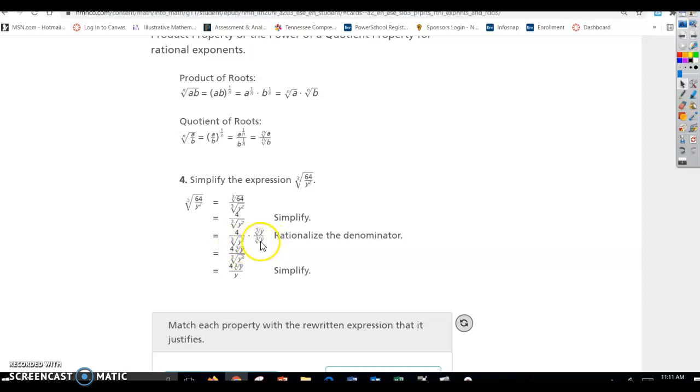And that would cancel and give you just y in the denominator. So remember, when you're rationalizing the denominator, you're going to multiply the top and bottom by the same thing. And when you do that, you're just kind of manipulating the problem. You're not really changing the problem. So that's going to give you 4 times cube root of y over the cube root of y cubed, which is just y.